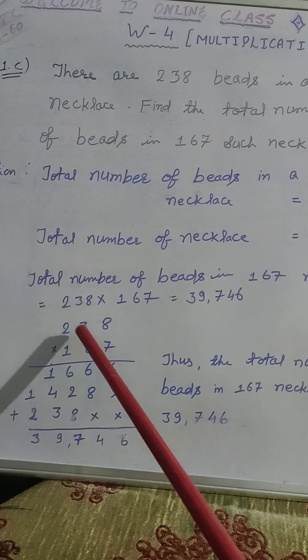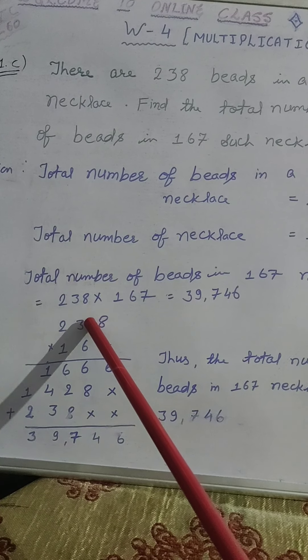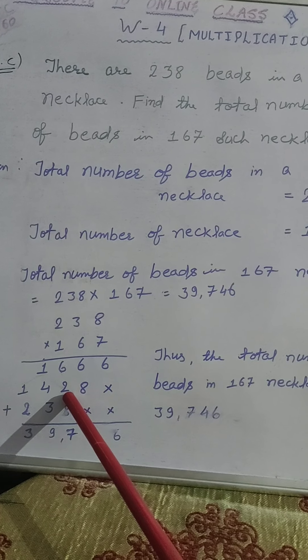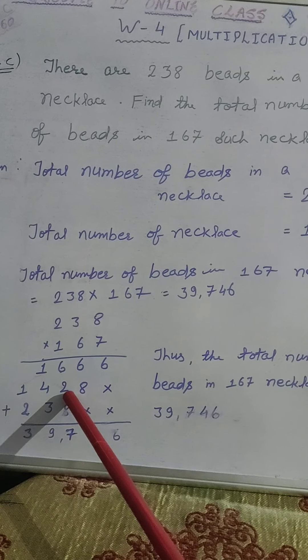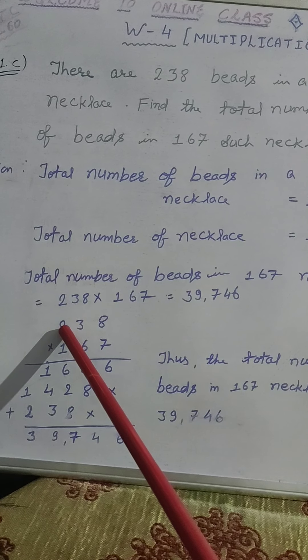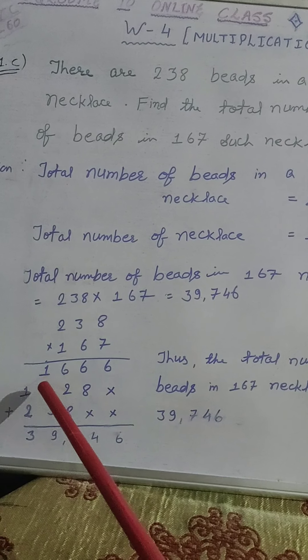6 times 3 is 18 plus carry 4 that will be 22. We will write here 2 carry 2. 6 times 2 is 12 plus carry 2, 14.